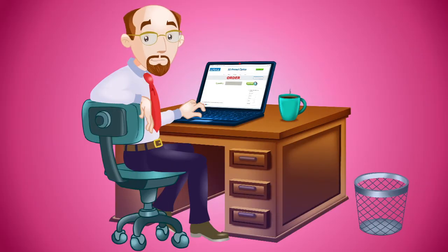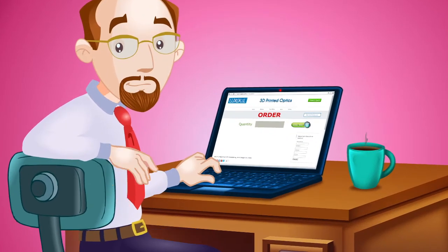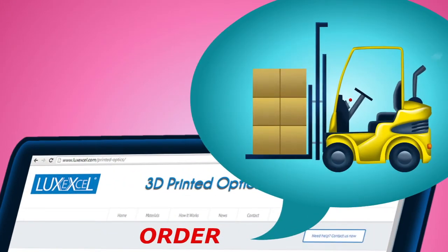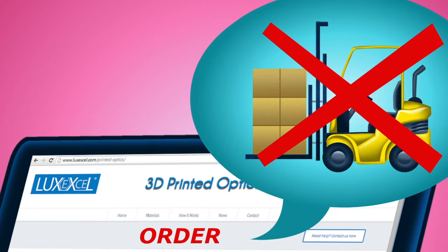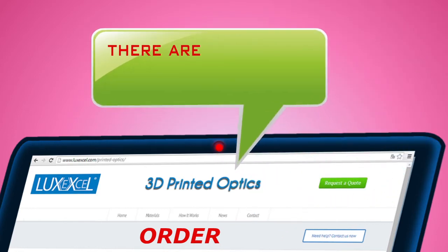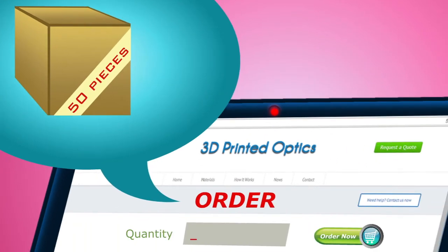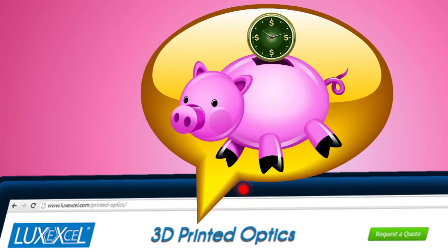John is happy, because now all of his lenses can be made digitally and super fast, without the need for him to buy minimal order volumes of thousands of components. With 3D printed optics, there are no minimal order quantities. If John only needs 50 pieces, he can simply order 50 pieces. This is saving him a lot of money and time.